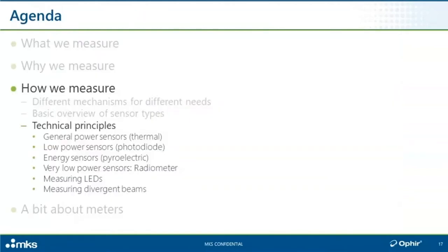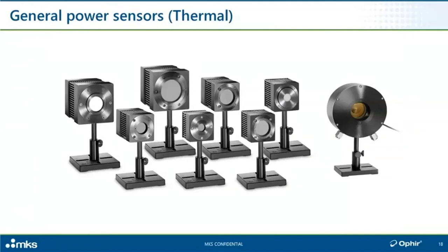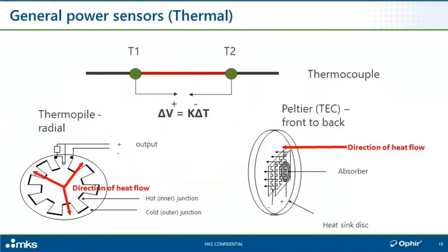Now let's drop down to a lower altitude and get into the more detailed technical principles. Let's begin with general power sensors for moderate to high power levels — from a couple of tens of microwatts up to 120 kilowatts in our case. You may be wondering why one would use such an indirect mechanism as heat absorption. It has its pluses and minuses — one of the first words you learn in any engineering curriculum is trade-off. Basically, dissimilar metals — bimetallic: metal A, metal B, metal A — suitably chosen and connected — have a physical principle that says if there is a temperature difference between two points, there's going to be a voltage difference between them as well.